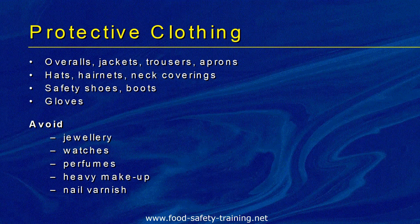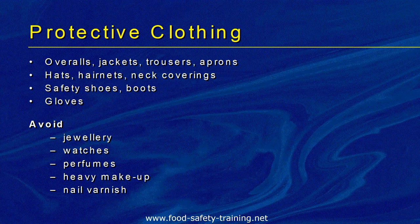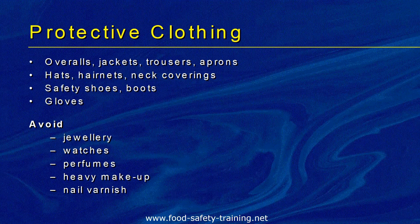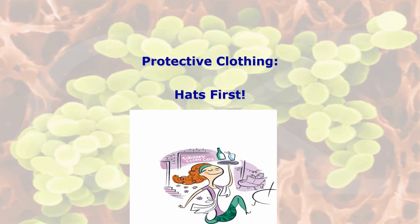Try to avoid wearing jewelry, especially earrings which could fall into food and act as a physical contaminant. Watches can get a build-up of food and dirt under the strap. Perfumes and aftershaves could chemically contaminate food. Heavy makeup could fall off into food and act as a physical contaminant, and nail varnish can have the same effect. A question that could come up in the exam is what do you put on first when wearing protective clothing — always put your hats on first.